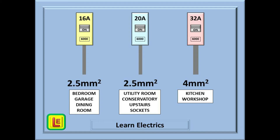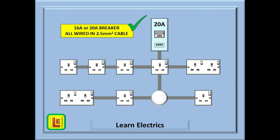So calculate or estimate the demand and choose a breaker size. The correct cable size is shown below the selections on this page. This slide is showing a good socket circuit: a 20 amp breaker is used and all the wiring is in 2.5 millimetre twin and earth. This means there are no restrictions on how many sockets there are or how they are arranged. The circuit is protected by a 20 amp breaker and the cable will take 27 amps — if you overload the circuit the breaker will trip before the cable is damaged.